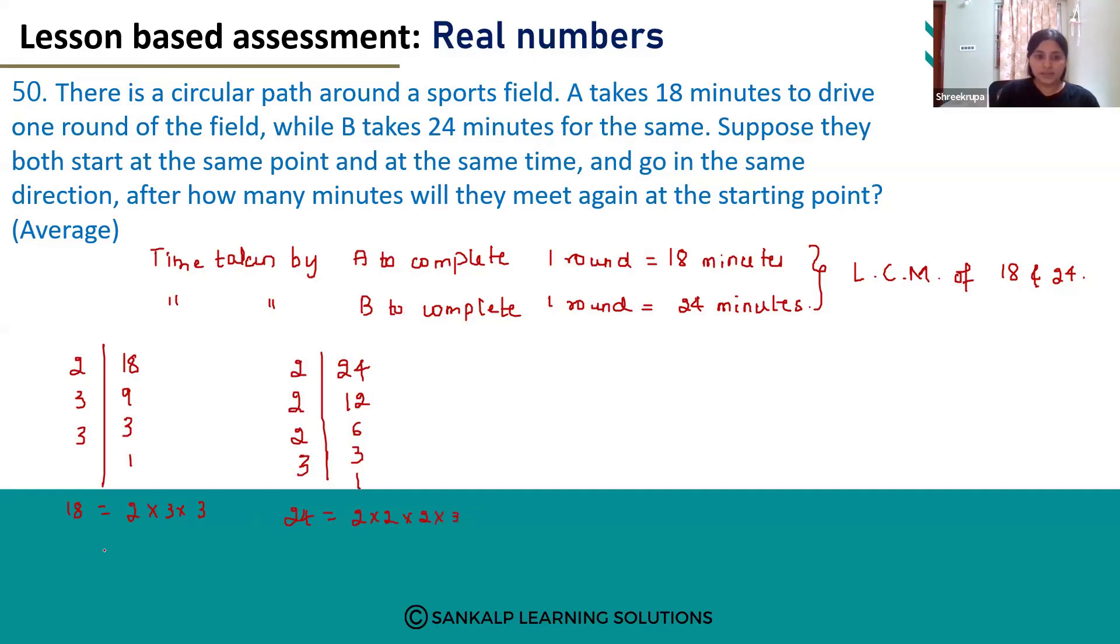Let's see the powers. It is 2 into 3 power 2 for 18 and 2 power 3 into 3 for 24. Here we are calculating LCM, so we should take all the common factors with highest powers. Highest power of 2 is 3 because in case of 18 it is 2 power 1, but in case of 24 it is 2 power 3. So, the highest power is 2 power 3 here.